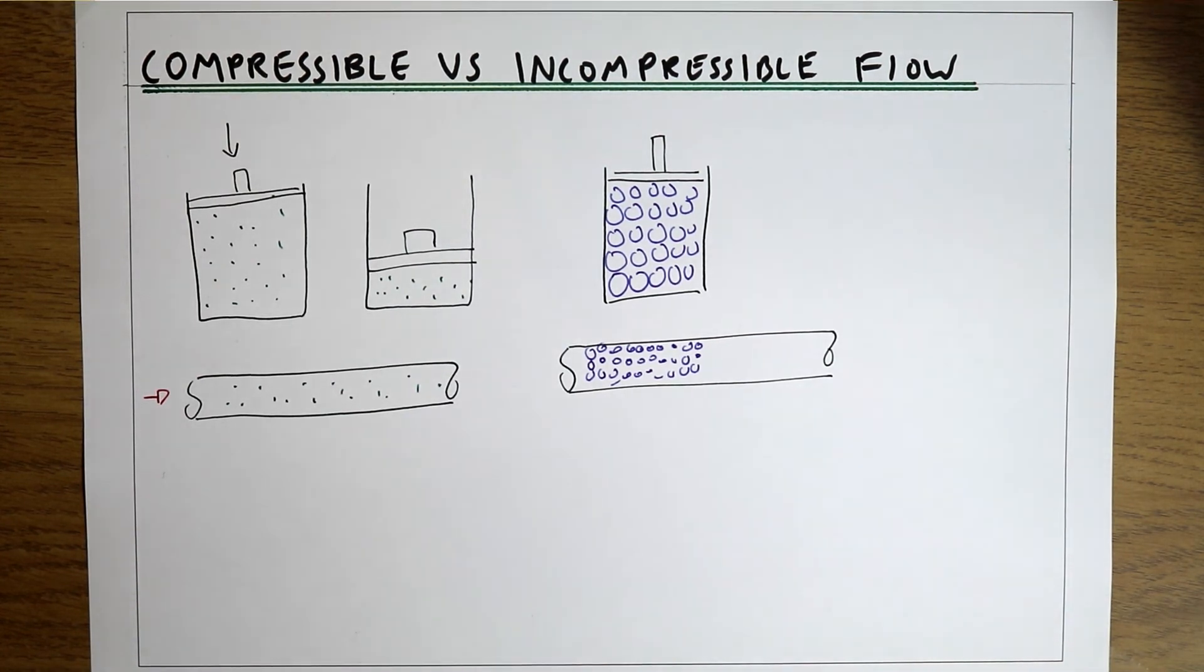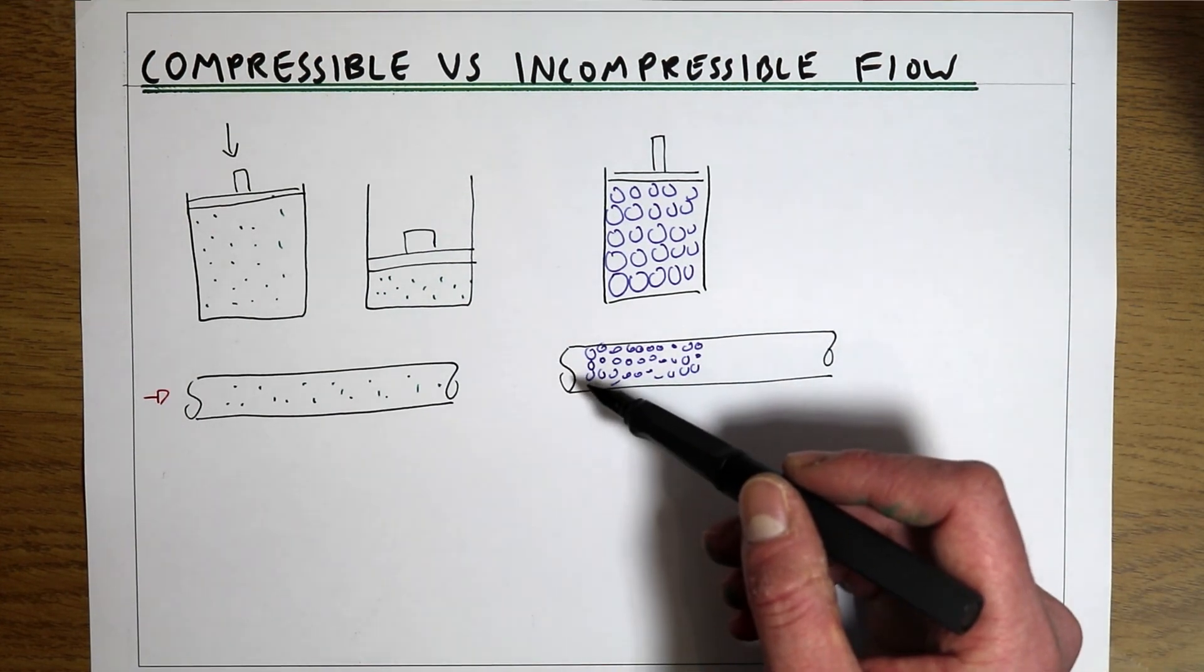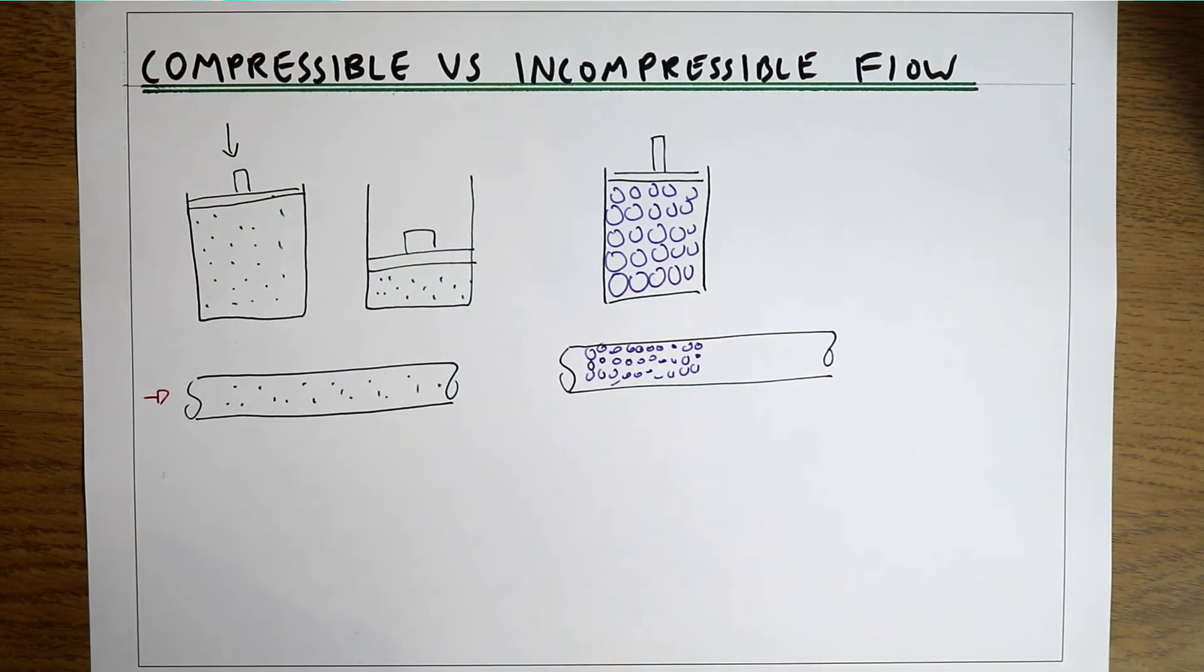So incompressible flow is one where the volume and density can't change, and that means that when we've got something like a full pipe, we know that anything that we do upstream is going to instantaneously translate downstream.